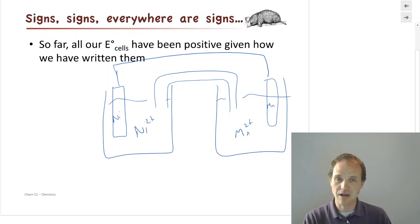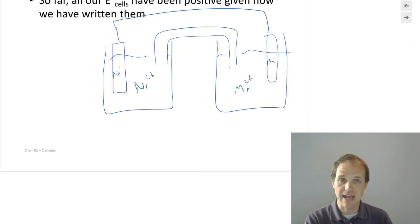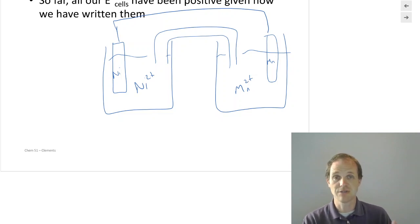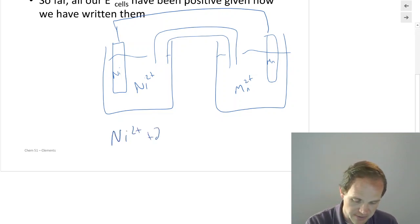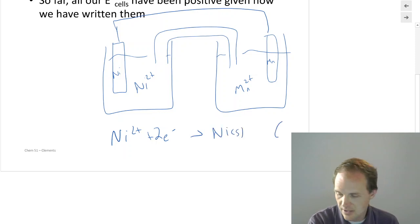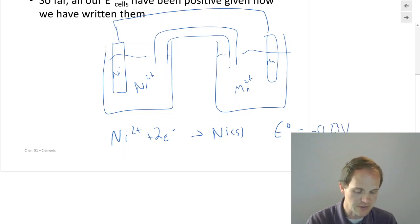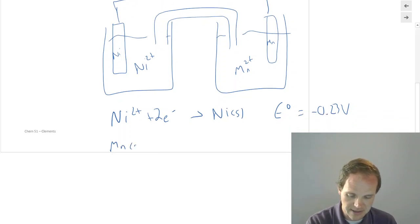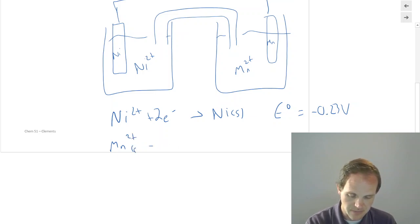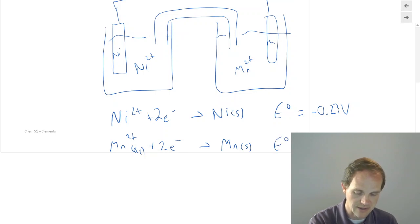I've got two possible things: nickel could be oxidized to Ni²⁺, or Ni²⁺ could be reduced to nickel. We're going to look in the table of standard reduction potentials — and remember, we always look up reduction potentials. For Ni²⁺ + 2e⁻ → Ni(s), that is -0.23 V. For Mn²⁺ + 2e⁻ → Mn(s), the standard cell potential is -0.13 V.